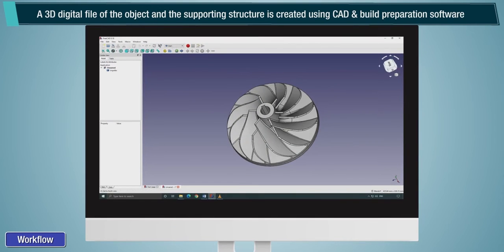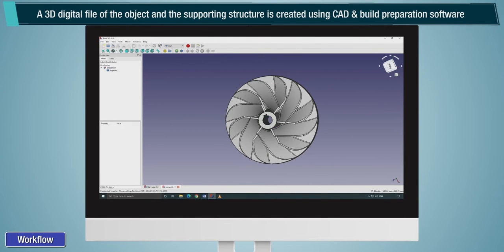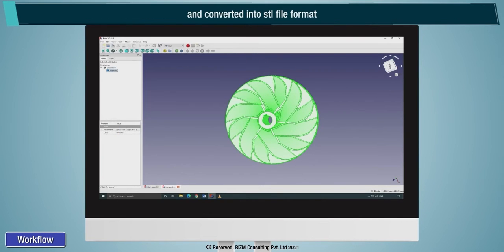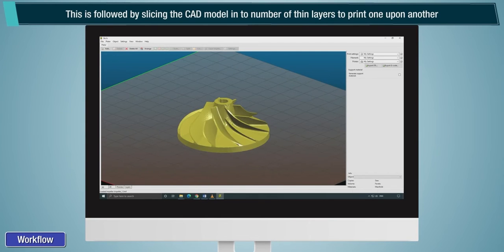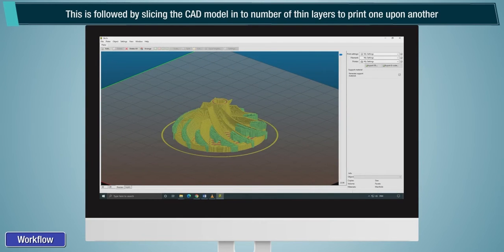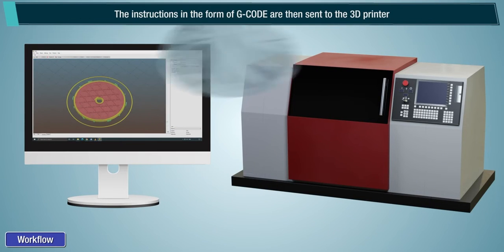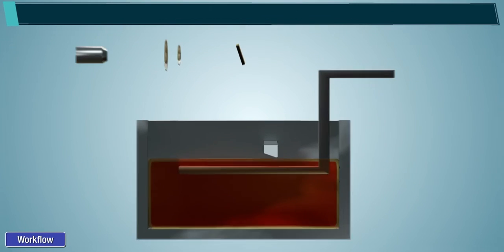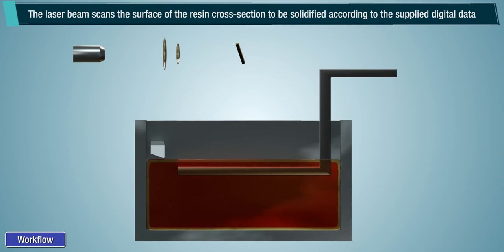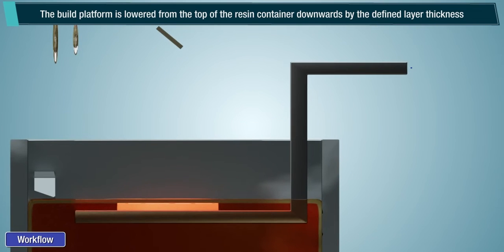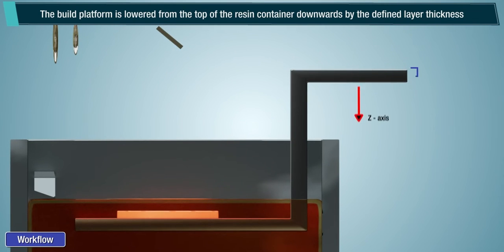A 3D digital file of the object and the supporting structure is created using CAD and build preparation software and converted into an STL file format. This is followed by slicing the CAD model into a number of thin layers to print one upon another. The instructions in the form of G-code are then sent to the 3D printer. The laser beam scans the surface of the resin cross section to be solidified according to the supplied digital data. The build platform is lowered from the top of the resin container downwards by the defined layer thickness.